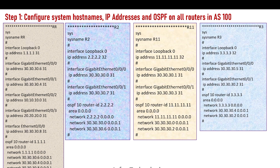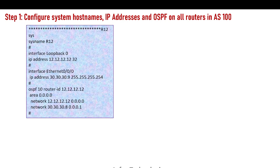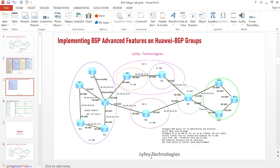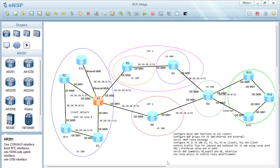For R2, we create interface loopback zero, assign IP addresses using /32, and assign IP addresses on the interconnected interfaces between routers, then create OSPF and advertise the networks. R11 is the same, R3 is the same — just interface configuration and OSPF. R12 is the same as well.